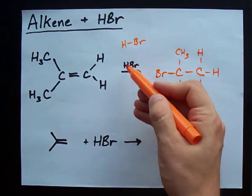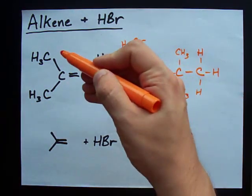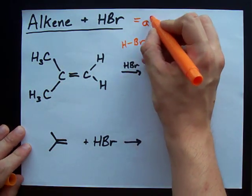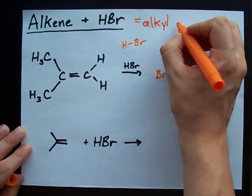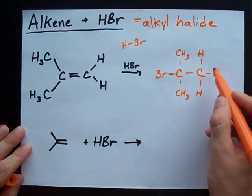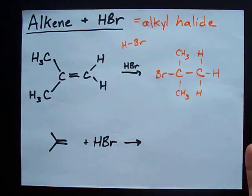This is how a hydrogen halide adds itself across a double bond. You actually end up with what's called an alkyl halide because you have a halogen atom attached to an alkane of some kind.